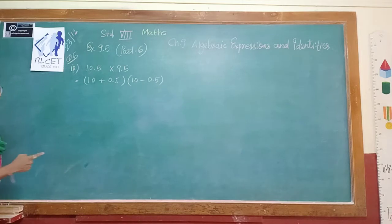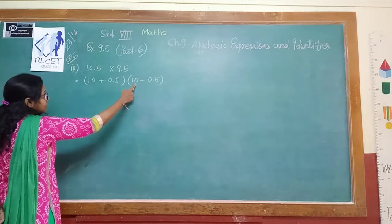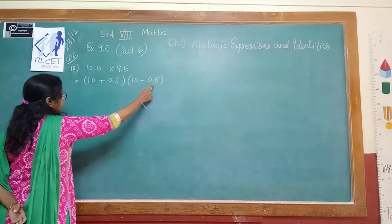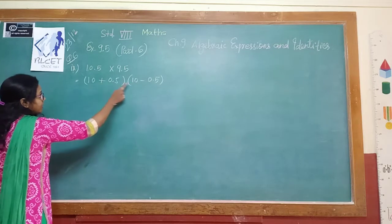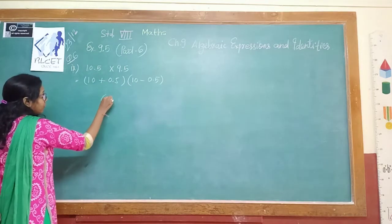If you observe both brackets, the first term is equal as well as the last term. What is the difference? Here it is plus, here it is minus. So which identity do we have to apply?